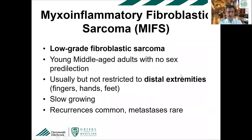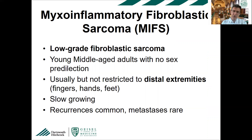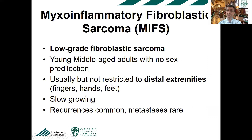Another tumor in the fibroblastic category is myxoinflammatory fibroblastic sarcoma, or MIFS — a low-grade fibroblastic sarcoma characterized by a superficial mass in soft tissues located above the fascia, many times involving the dermis and subcutis. It happens in young and middle-aged adults with no sex predilection and usually occurs in distal extremities — fingers, hands, and feet — but has been described in the head and neck region, scalp, trunk, and buttocks.